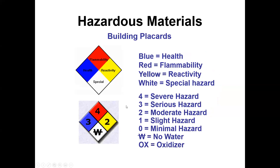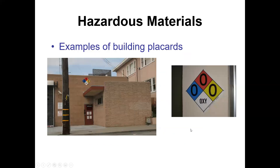Hazardous materials: the placard signals an area we do not want to enter. A building placard has four different colors indicating different hazards — red is flammable, and the number indicates severity. As CERT, we would not enter a hazardous materials building because we have no means of protecting ourselves. A placard with an oxidizer symbol is also dangerous — oxidizers can create fire just from being in the presence of a combustible such as oil.